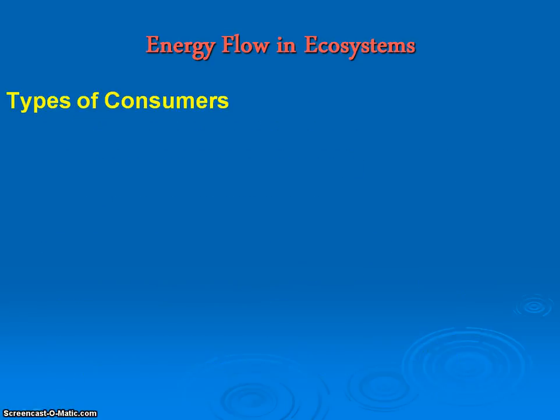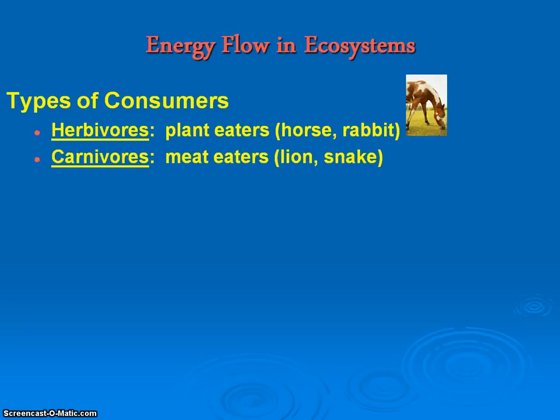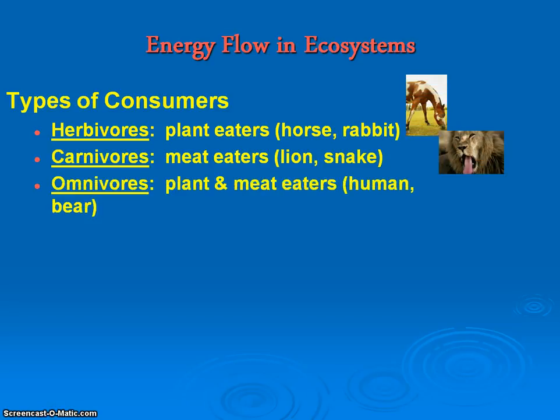Staying with consumers, we have different levels of consumers. We know we've got herbivores, which are our plant eaters. Then we have our carnivores, which are just our meat eaters. And then omnivores, which would eat both plants and animals.